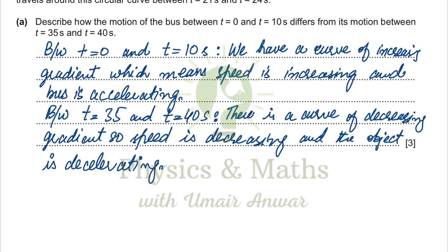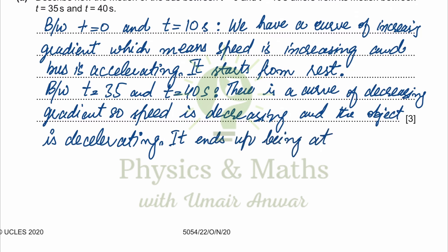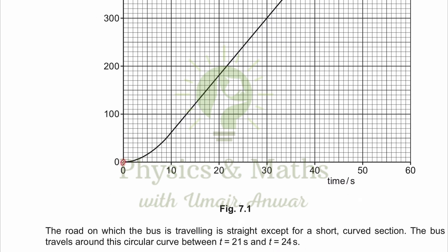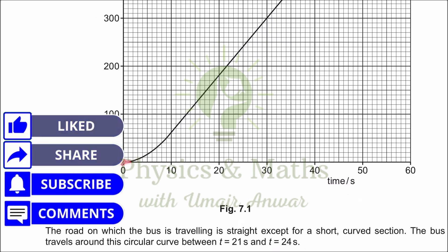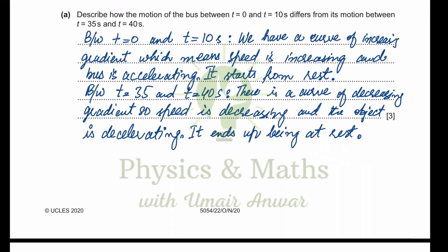For the third mark, we note that the bus starts from rest and speeds up between t equals 0 and 10 seconds, and it ends up at rest at t equals 40 seconds, as the graph becomes perfectly horizontal at that point. In the initial portion the graph starts horizontal and then begins increasing, showing the bus started to speed up from rest.